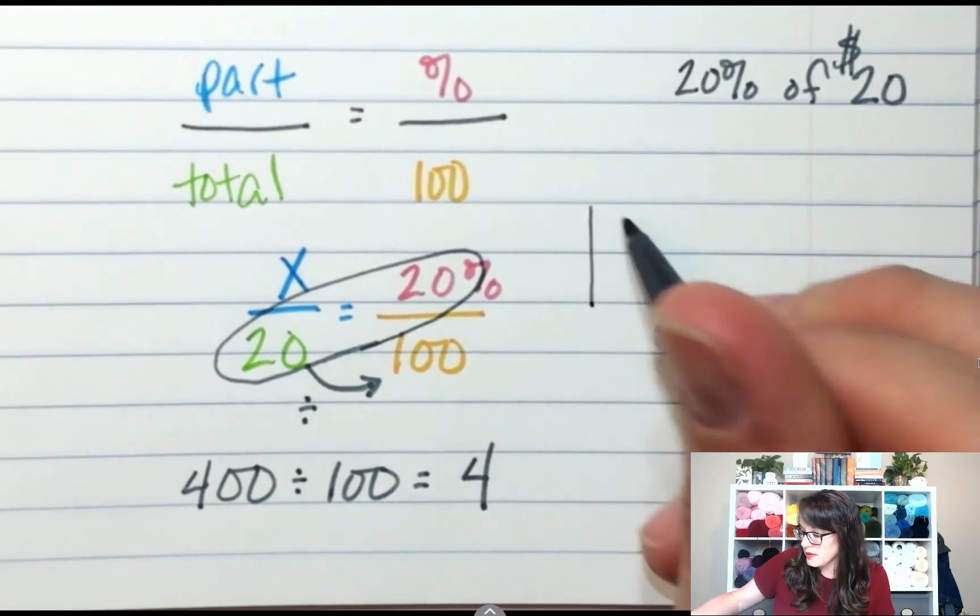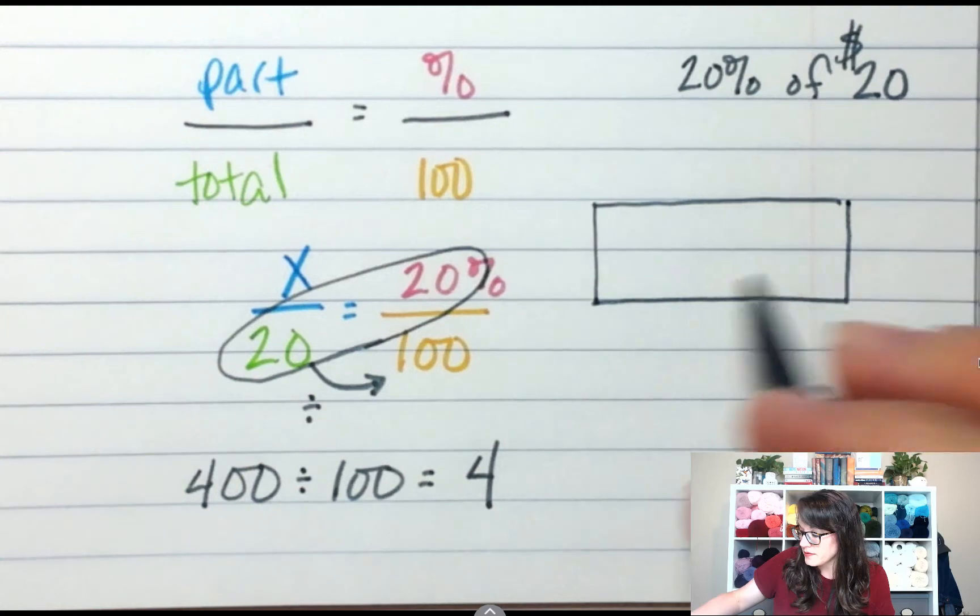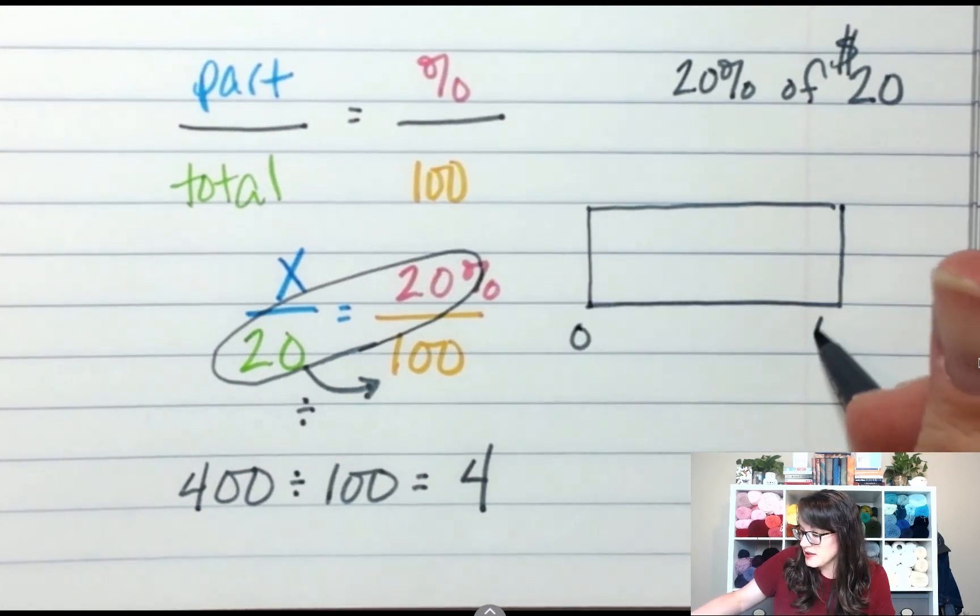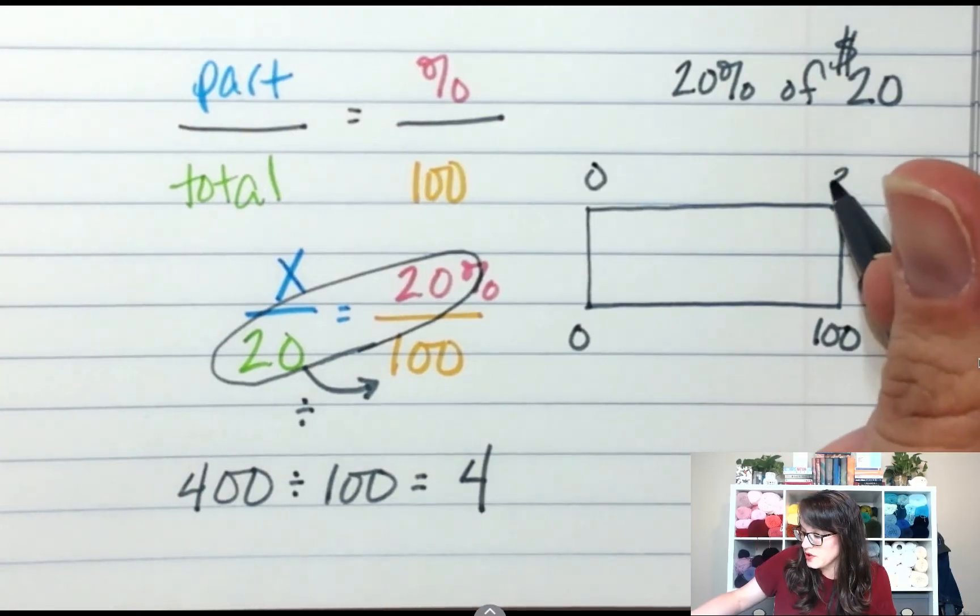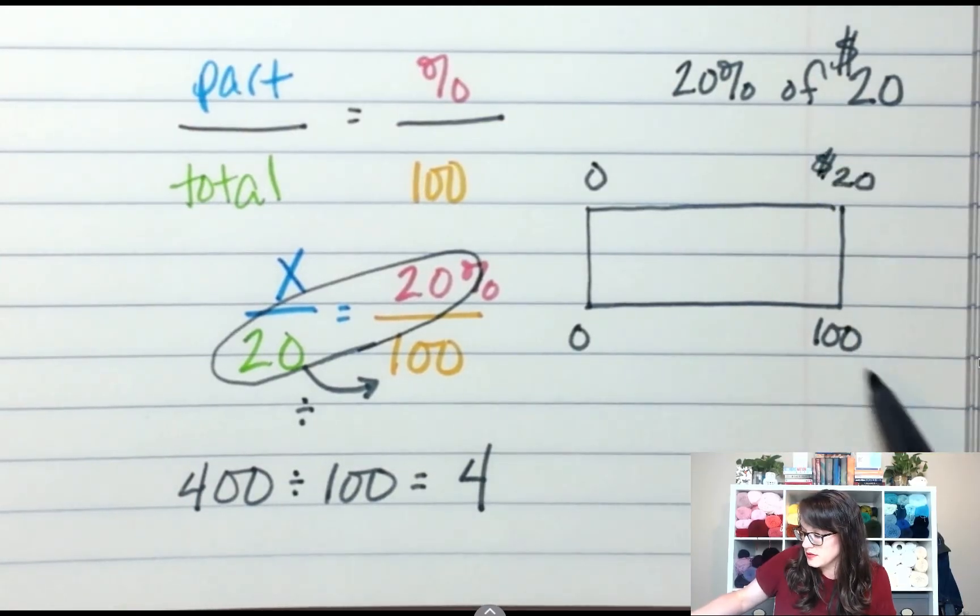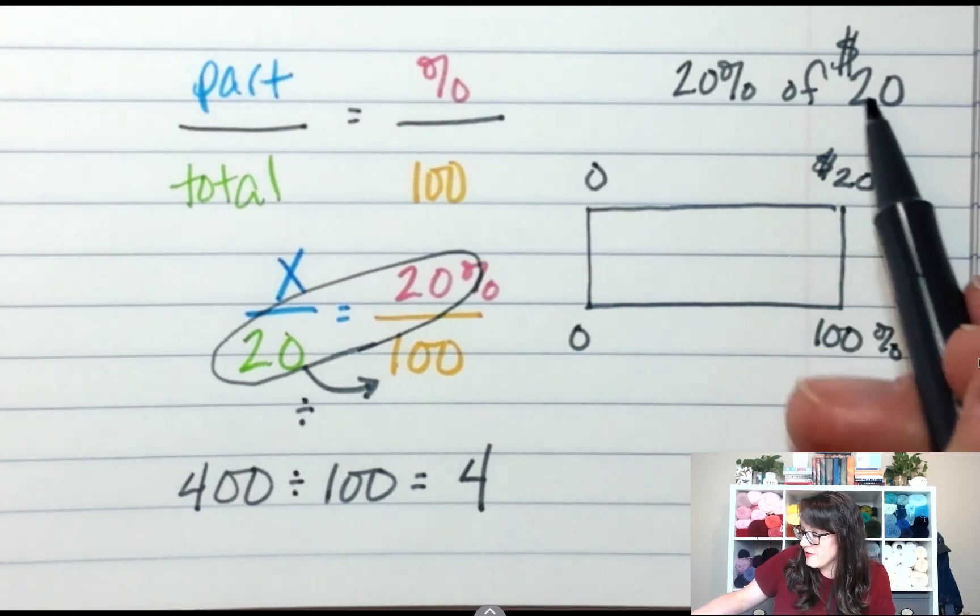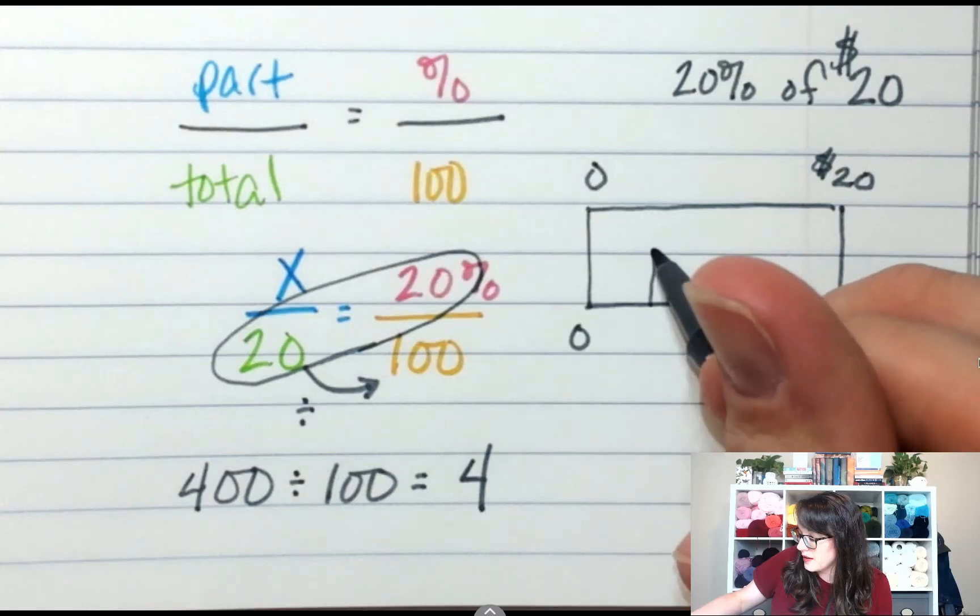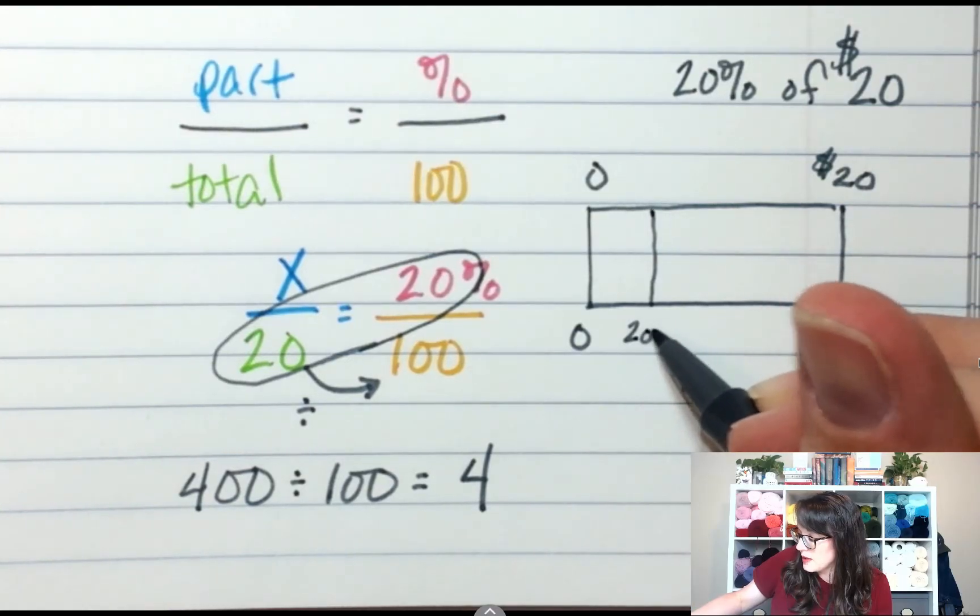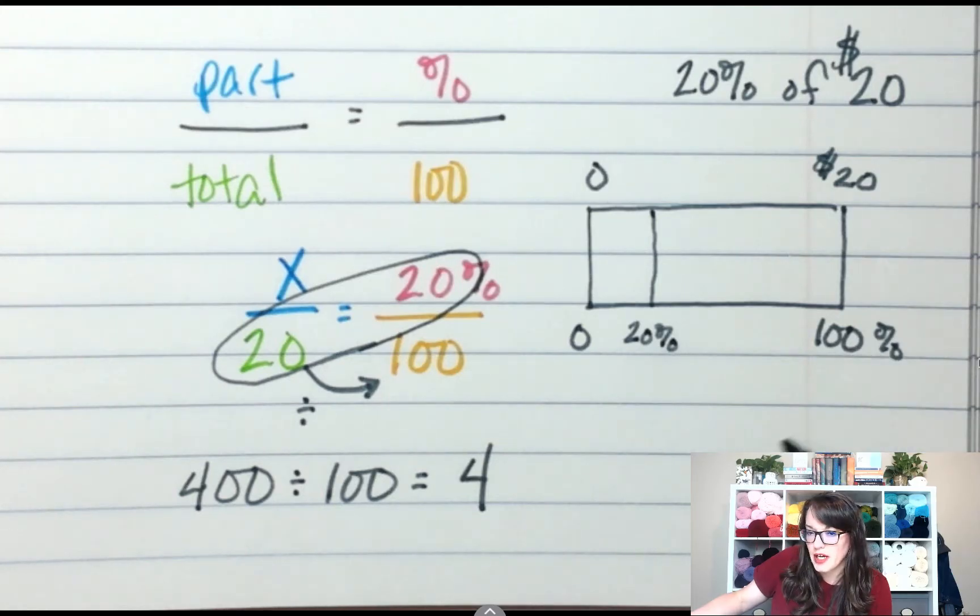If we wanted to look at a ratio table, this one's going to be easy. 0%, 100%, $0, $20. So I need to find 20%. Let's say it's like right here. 20%. Is there an easy way to get from 100 to 20?